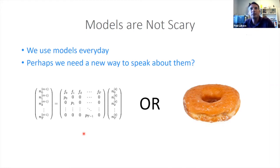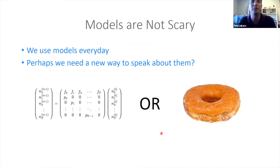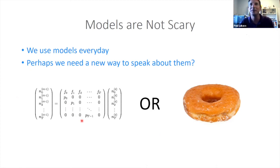Regardless of what it is, by writing it down in its mathematical format we can take away the scariness. It actually helps us get away from these mental ideas and can turn our scary model into something more pleasant, like a donut. If we keep our conversation light, we can keep them more donut-like than Lefkowitz matrix-like.